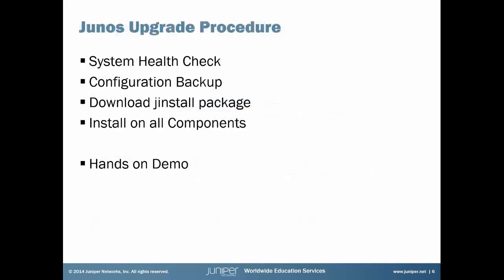The Junos Upgrade Procedure. Listed here are the upgrade steps for the QFabric system. First, a system health check is run to make sure all the devices in the fabric are operational and connected, and also to verify that all are on the same version of Junos. Next, a backup of the configuration file is created in case something goes wrong. Then, the Jinstall package needs to be downloaded to the QFabric system. Finally, the install command is run on the devices to start the upgrade. This can take up to an hour, so sit back and relax, or go grab a cup of coffee.